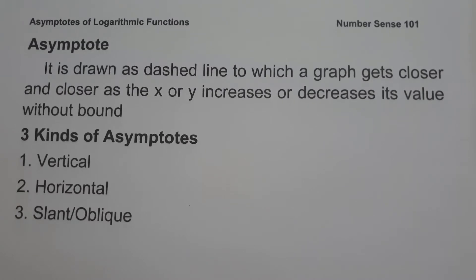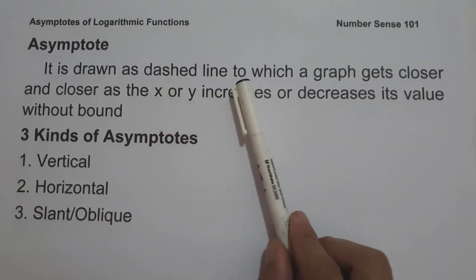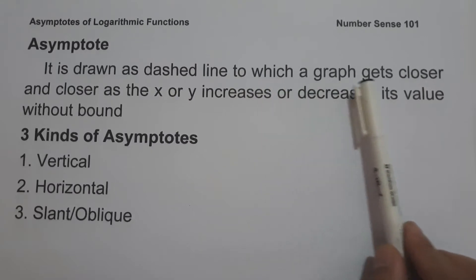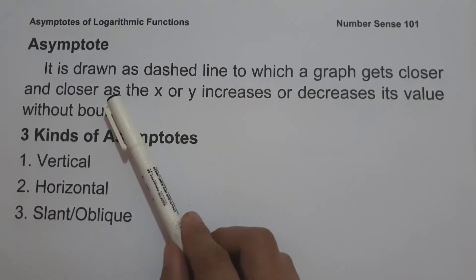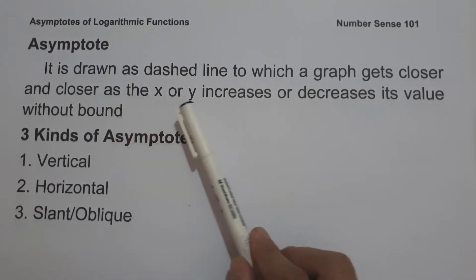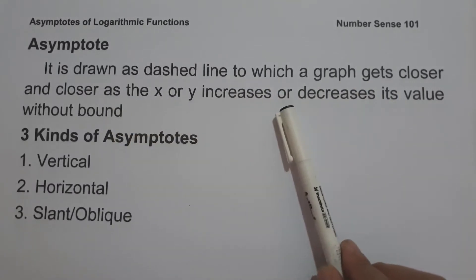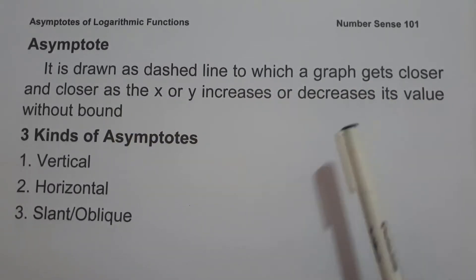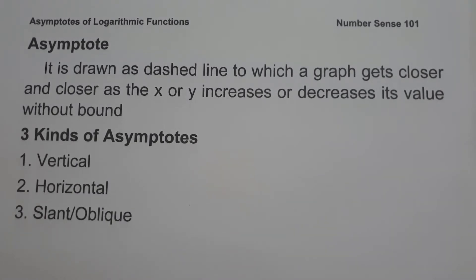When we say asymptote, it is drawn as a dashed line to which a graph gets closer and closer as the x and y increases or decreases its value without bound. Always remember, an asymptote serves as a boundary line which the graph of the function approaches.